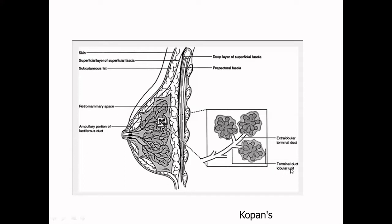The TDLU is important because this is the place where most pathologies of the breast occur. Especially, the junction of the extra-lobular terminal duct with the lobule is the most common site for ductal malignancies — ductal carcinomas. Can we see these on imaging? We'll come to that in further slides.